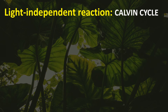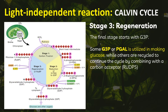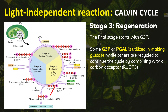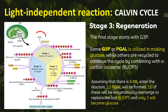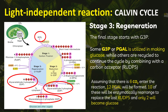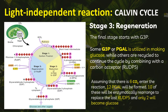NADP+ and ADP are available again for conversion during cyclic and non-cyclic reactions. For stage three, the regeneration stage: some G3P or PGAL is utilized in making glucose while others are recycled to continue the cycle by combining with the carbon acceptor RuDP5. Assuming six carbon dioxide molecules enter the reaction, 12 PGAL will be formed. Ten of these will be enzymatically rearranged to replace the lost RuDP5, and only two will become glucose.